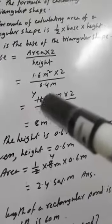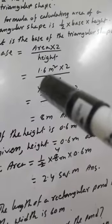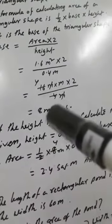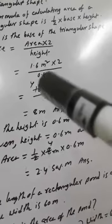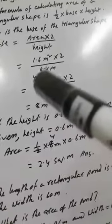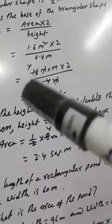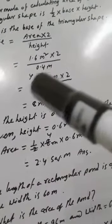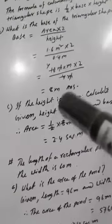Now if we divide: in the denominator after the decimal there is 1 digit, so we can remove the decimal and write 16 divided by 4. M squared means M multiplied by M, and multiplied by 2. Removing the decimal gives 16 divided by 4, which equals 4. The M units cancel, leaving 1 M. So 4 times 2 equals 8 meters. The base is 8 meters.